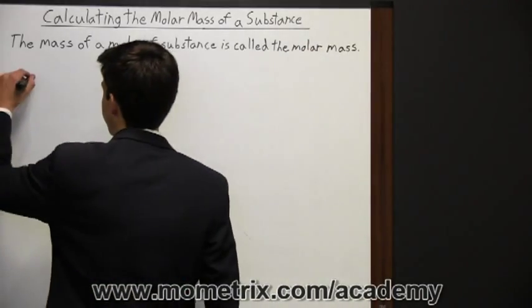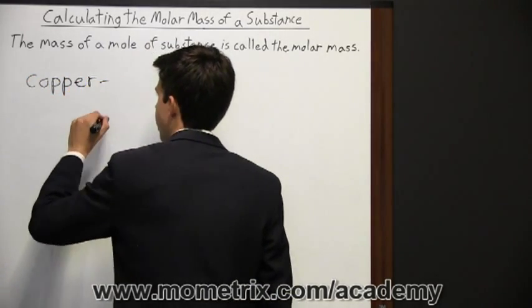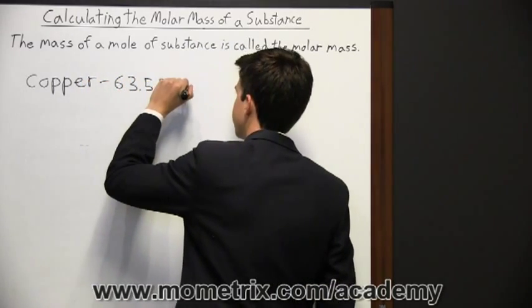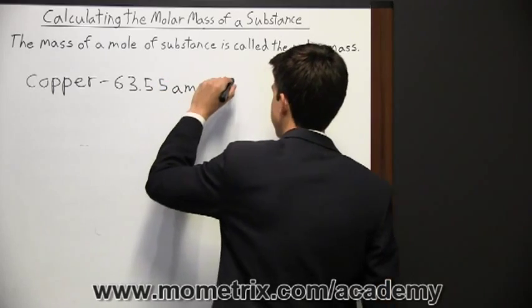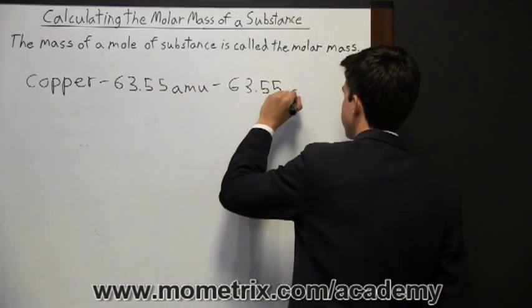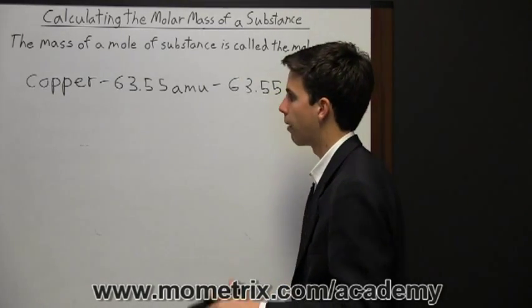So if you were looking at the element of copper, you would look in the periodic table and find that it has an average atomic mass of 63.55 amu. So that's the molar mass. So now we'll write it with a different unit because it's also our molar mass. And that will be grams over moles. So that's the molar mass of copper.